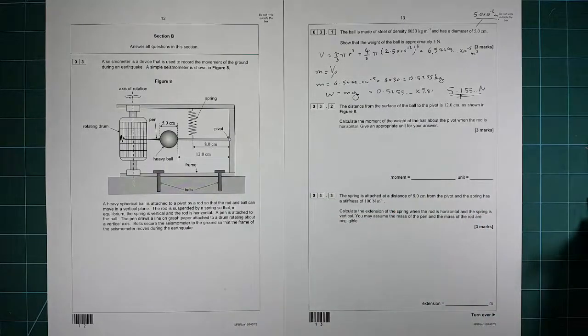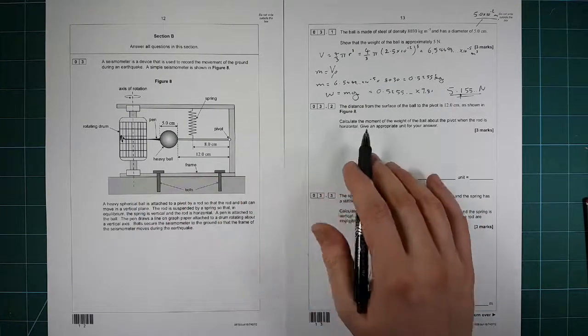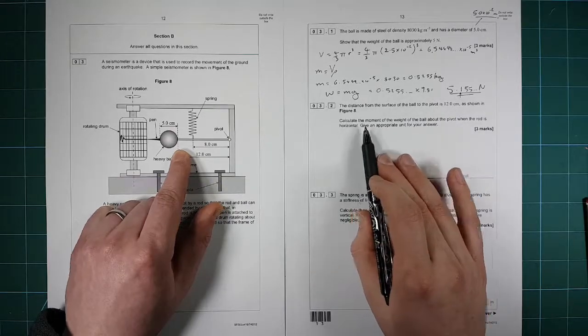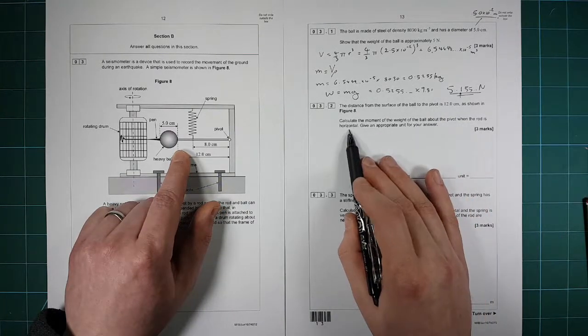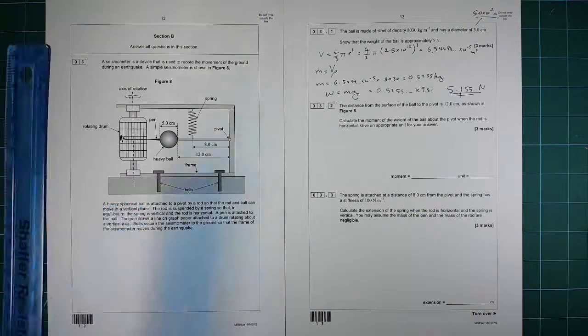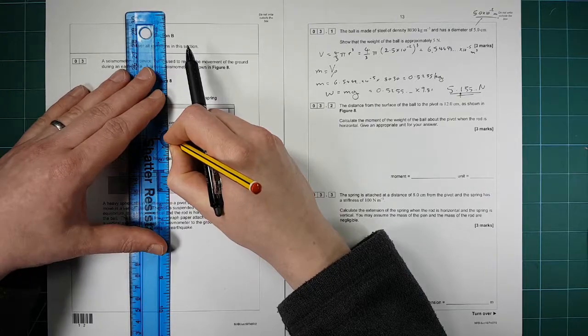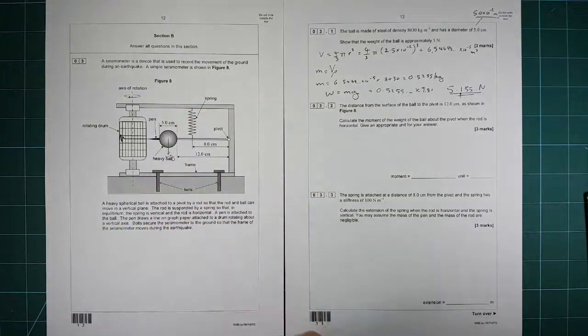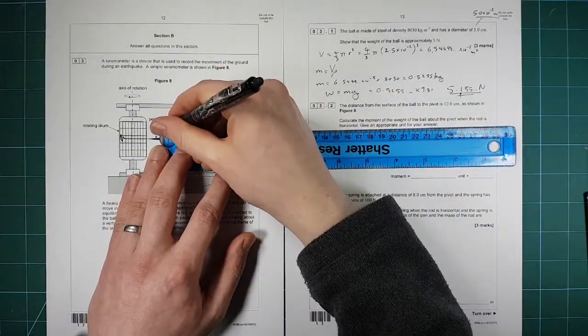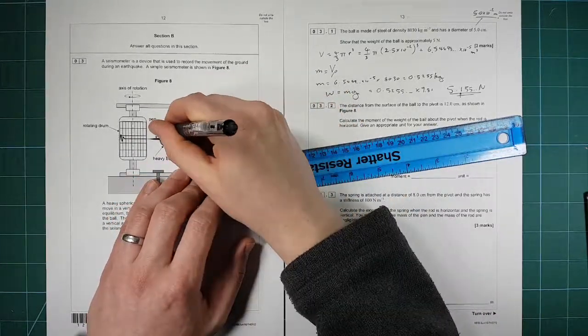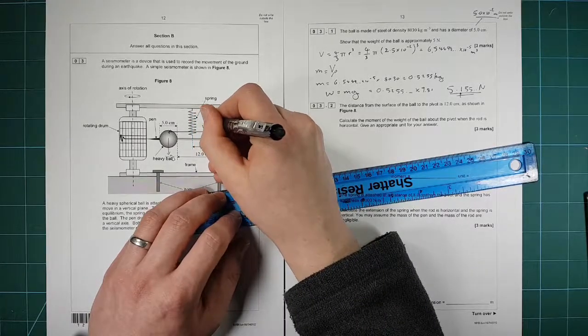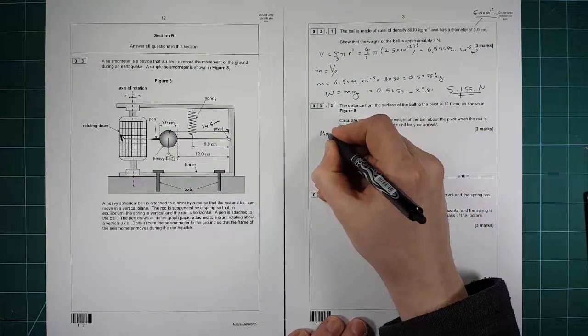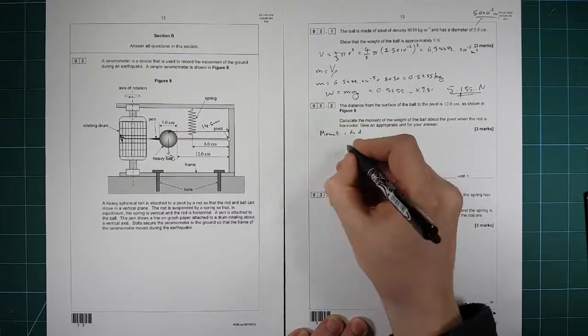Next, we are looking at the distance from the pivot to the ball is 12 centimeters. Calculate the moment of the weight of the ball around the pivot when it's horizontal. So they're trying to put a little trick in here, which is you've got to remember that the weight of the ball acts through the center there, so the distance to the pivot there is of course 14.5 centimeters, not 12 centimeters. So the moment is equal to force times by the perpendicular distance to the pivot.